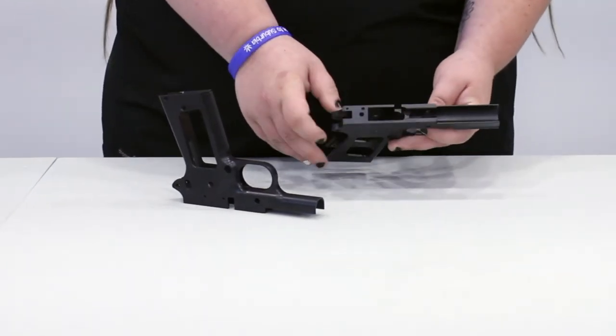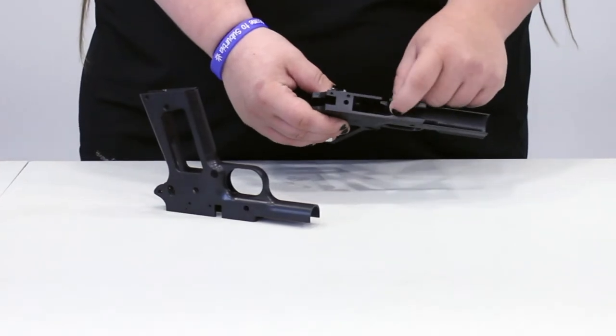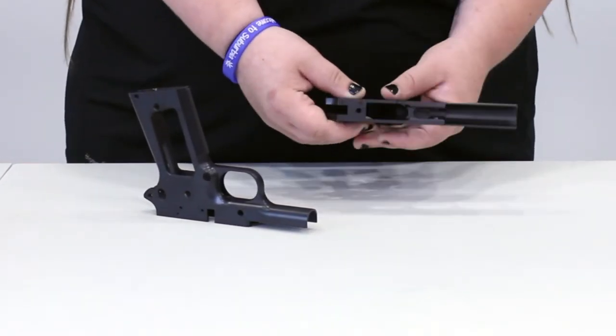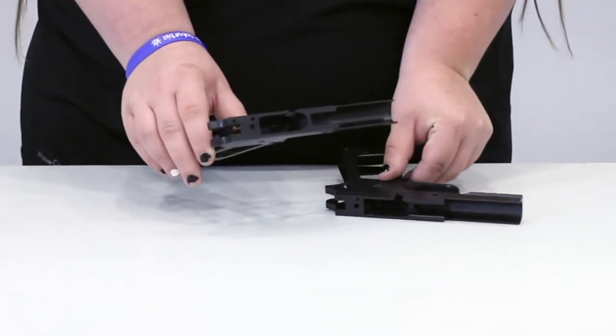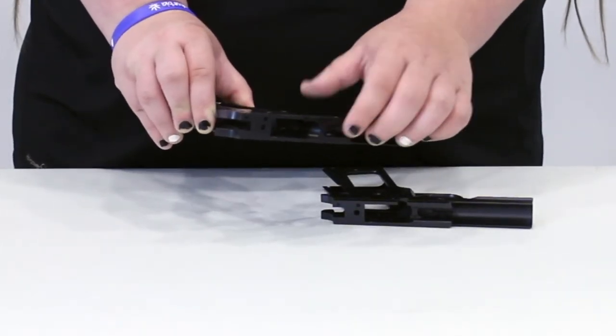And then this, right there, is missing the barrel seat, so this would be for a ramp barrel. And then this one has a built-in barrel seat, and that's for a non-ramped barrel.